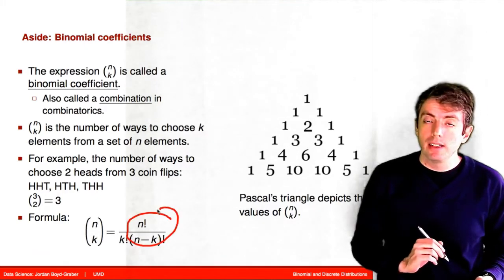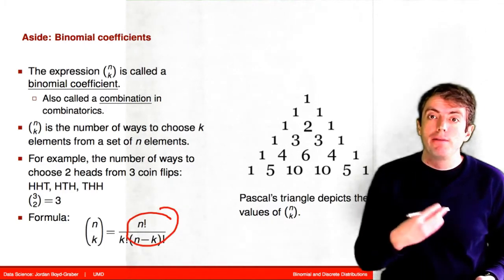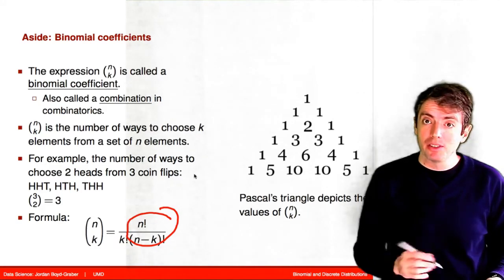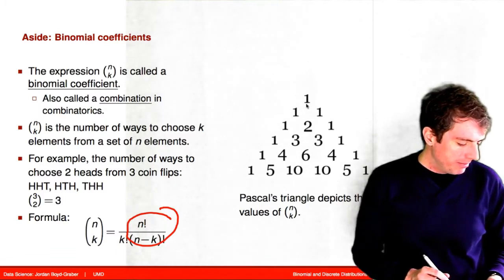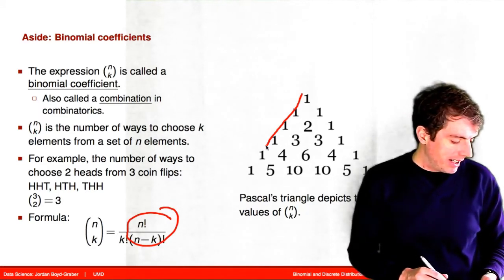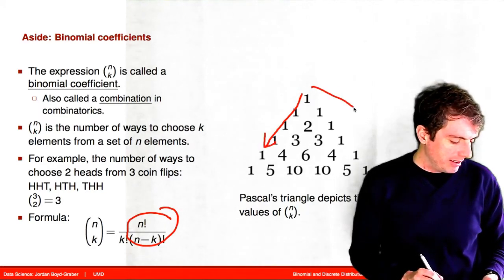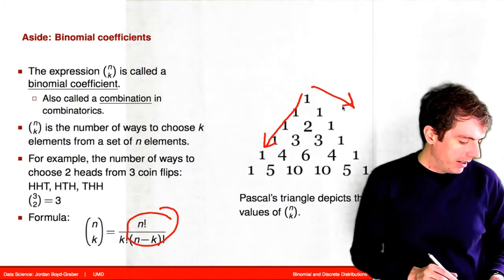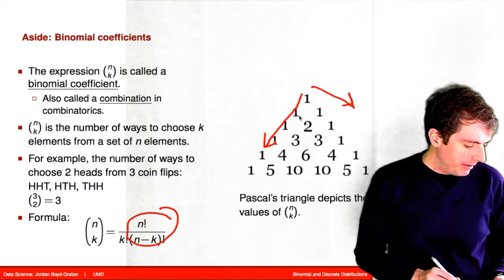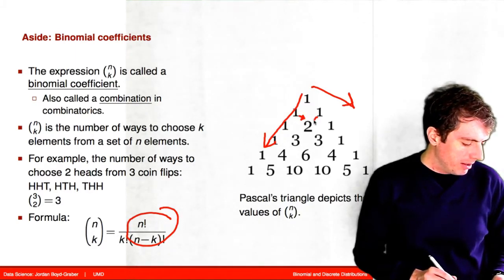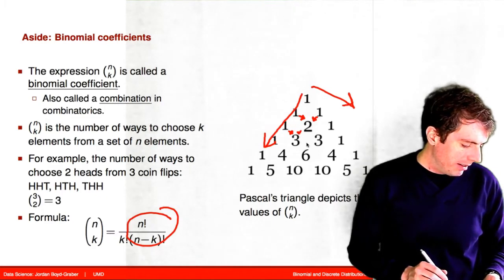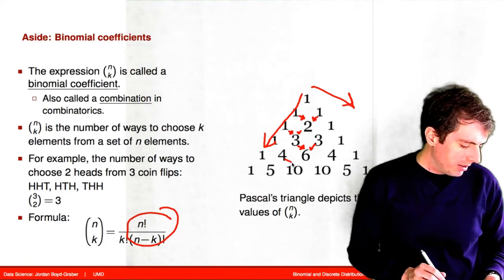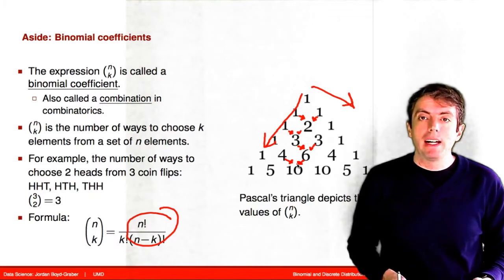One way of figuring this out, if the numbers are small enough, is by filling out what's called Pascal's Triangle. You start by writing a 1, then create a triangle where 1 is on the left and right sides. To fill in the inside, you look at the numbers above to your left and right and add them together. So 1+1=2, 1+2=3, 3+3=6, 4+6=10, and so on. You keep doing that to build Pascal's Triangle, from which you can look up any of the binomial coefficients you need.